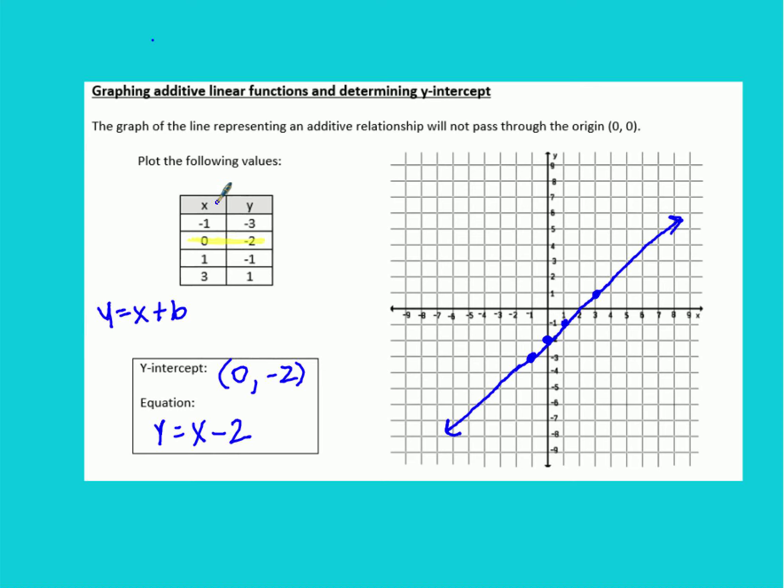Now for every x value you put in here you should get the y value that was given. So if we go back and test one of these ones that they gave us, if I plug in a negative 1 for x right here, negative 1 minus 2 would get me negative 3. And that is what our y value should have been so that is correct there.